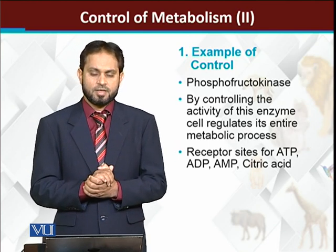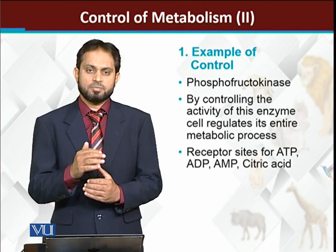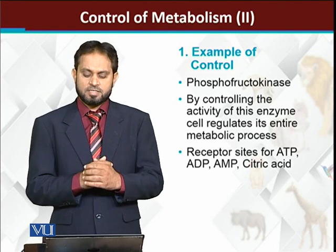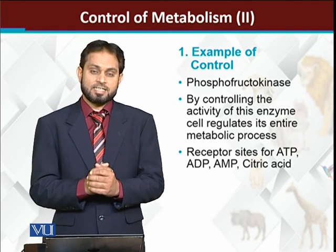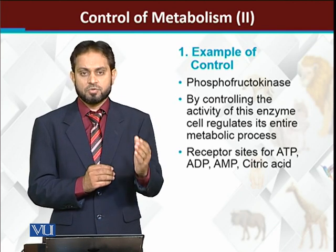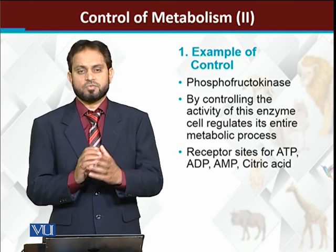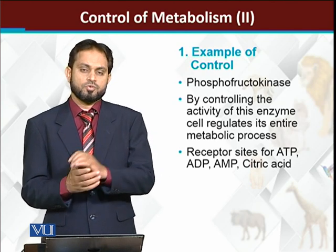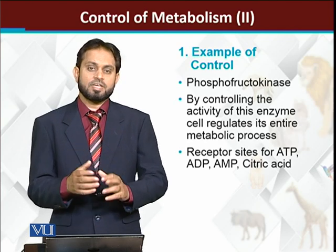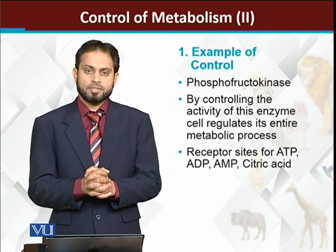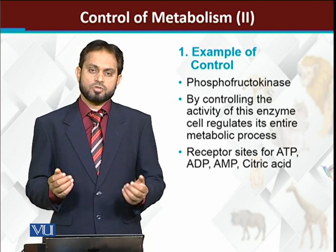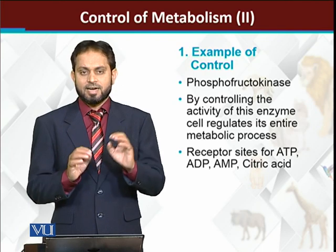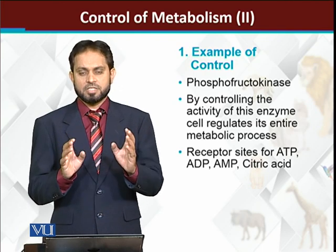Glycolysis is basically a 10-step reaction. In its early steps, reaction step number 3 involves the enzyme phosphofructokinase, which converts fructose-6-phosphate into fructose-1,6-bisphosphate. This means reaction number 3 of glycolysis contains phosphofructokinase — this enzyme is very important with reference to the control of the glycolysis process.